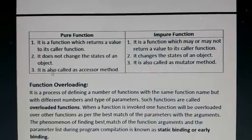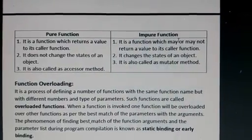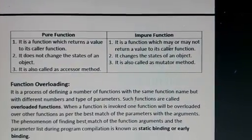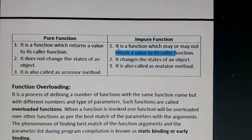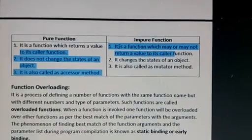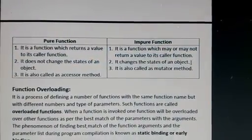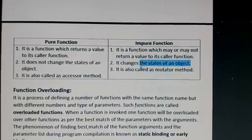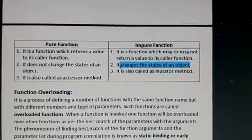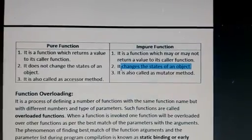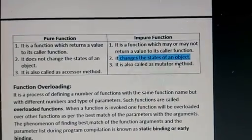A pure function is also called an accessor method. An impure function, on the other hand, is a function which may or may not return a value to its caller, and it changes the state of an object — as in the pass by reference concept where the object is changed. So it is also called a mutator method.